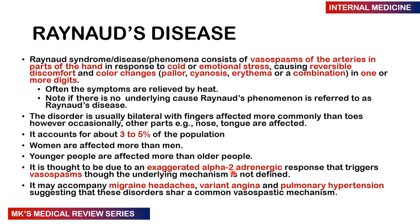When you talk about Reynolds disease, you can also refer to it as Reynolds syndrome or Reynolds phenomenon. You're basically going to be having vasospasms affecting the arteries and parts of the hand in response to certain triggers such as cold and emotional stress. This causes reversible discomfort and color changes which may include pallor, cyanosis, erythema, or a combination of the three in one or more digits. Symptoms are relieved by applying heat. If there is no underlying cause, you refer to it as Reynolds disease.